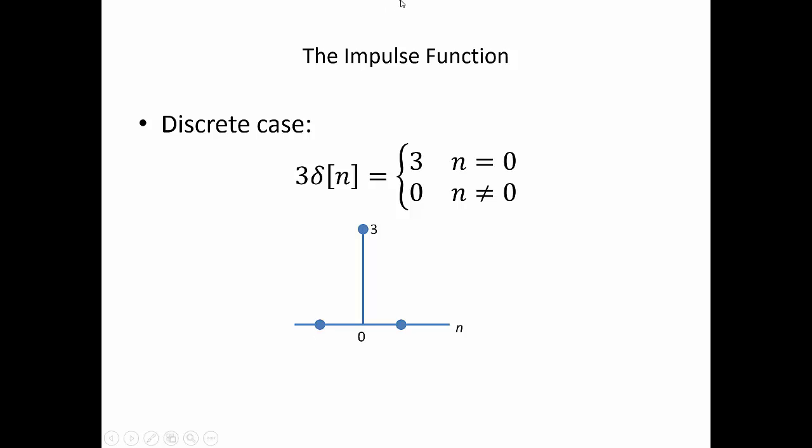If we scale this function, then the amplitude gets scaled by 3 and becomes 3. It still only occurs at time 0, so we then would also scale our plot.